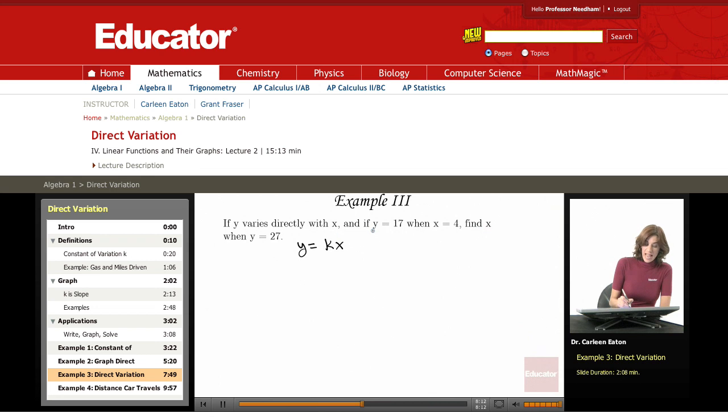Looking here, I have a pair that tells me that when x is 4, y is 17. So when x is 4, y is 17. Now I have an equation, 17 equals k times 4. Dividing both sides by 4 allows me to determine that k is 17 over 4.